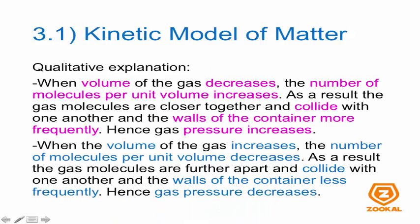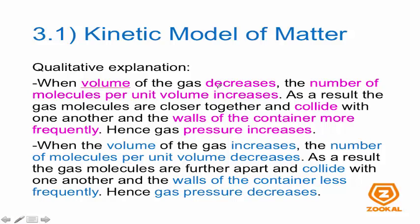For the qualitative explanation: when the volume of a gas decreases, the number of molecules per unit volume increases — the density increases. As a result, the gas molecules are closer together and collide with one another and the walls more frequently, so pressure increases. Imagine you are in a big empty room with 10 people — as the room gets smaller, you become closer together and the chances of touching the walls increase. Hence, pressure increases.